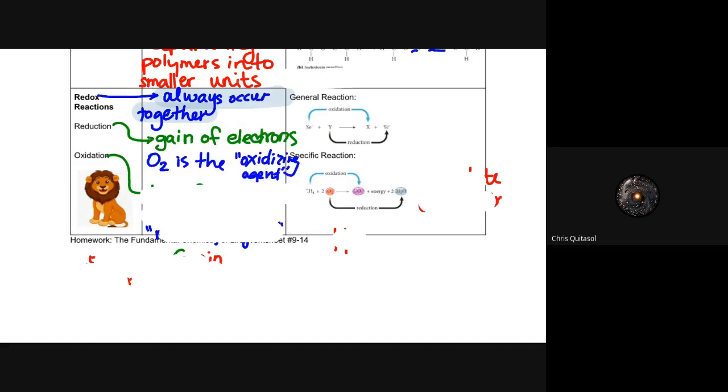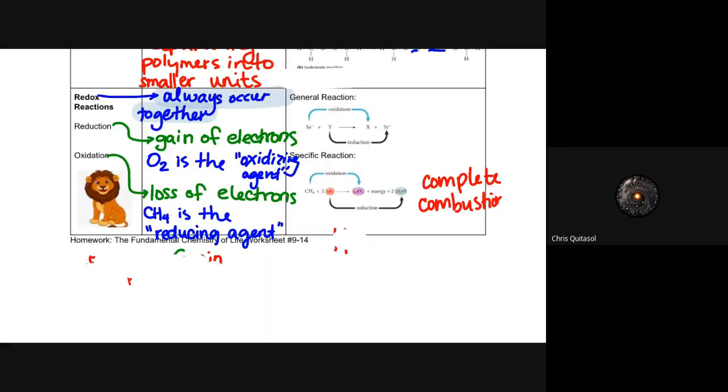What is a redox reaction? It's a reduction or a gain of electrons. In this case, oxygen is the oxidizing agent. Oxidation is a loss of electrons, so CH4 is the reducing agent. We have two things working together in an attempt for one to gain electrons and one to lose electrons.